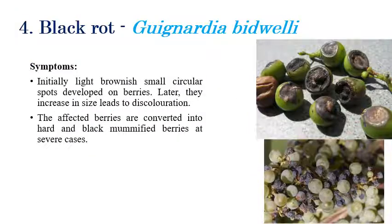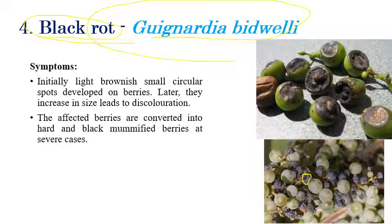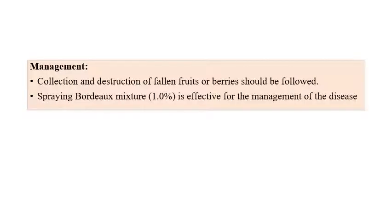Black rot is caused by Guignardia bidwellii. The name indicates black color rotting of berries. The size of fruits can be reduced, and some mummification can be seen. Berries are converted into hard black mummified berries or black shrinking masses. For management, collecting and destruction of fallen berries and leaves, along with spraying of Bordeaux mixture, is very effective in managing this disease.